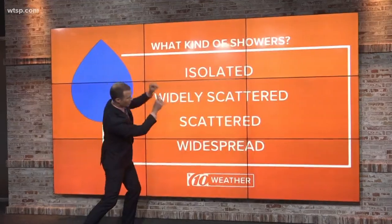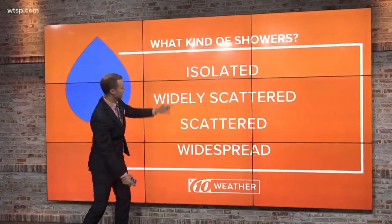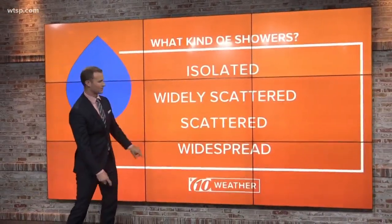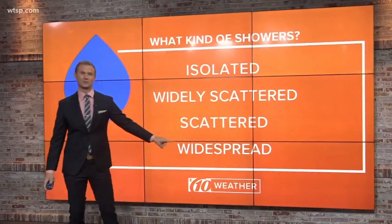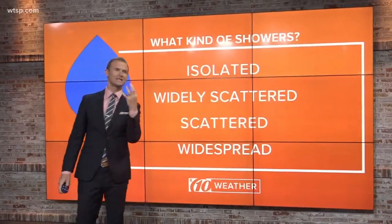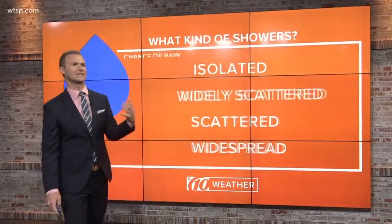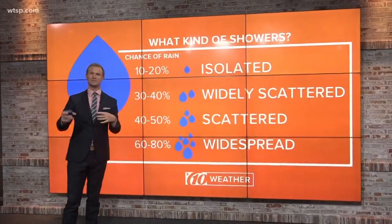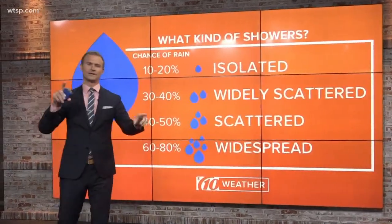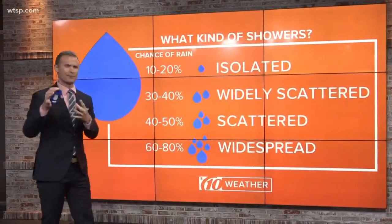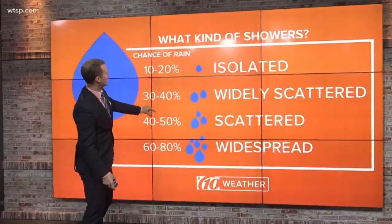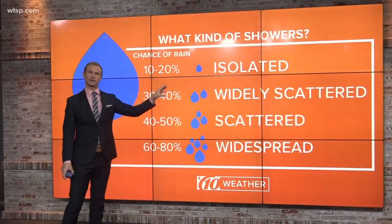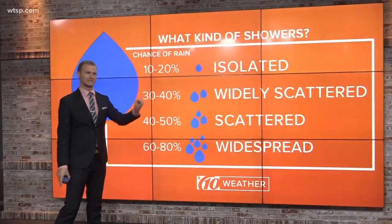Well, let's break down all of these here. So you have isolated, widely scattered showers, scattered showers, and then widespread showers. And if you just think about it, don't make it too complicated — just think about what those words mean. Isolated basically just means a couple here or there. Anything between 10 to 20%, I'll say a chance of isolated showers.